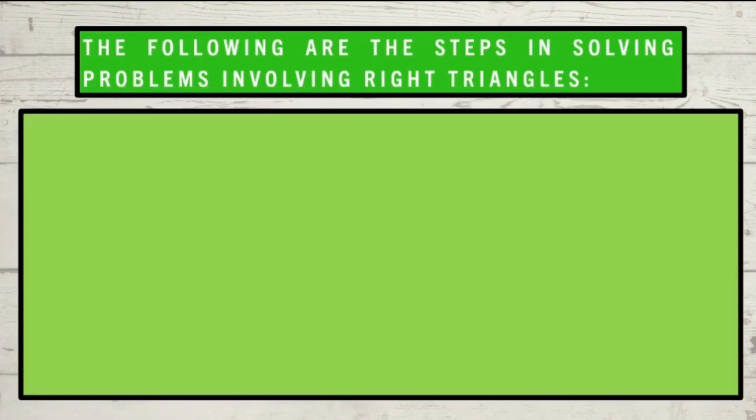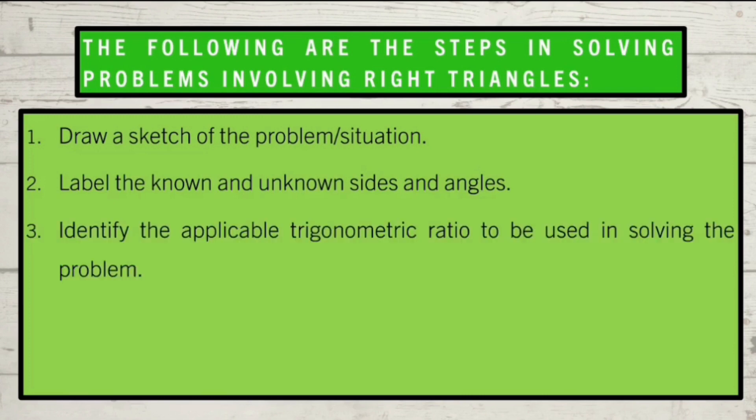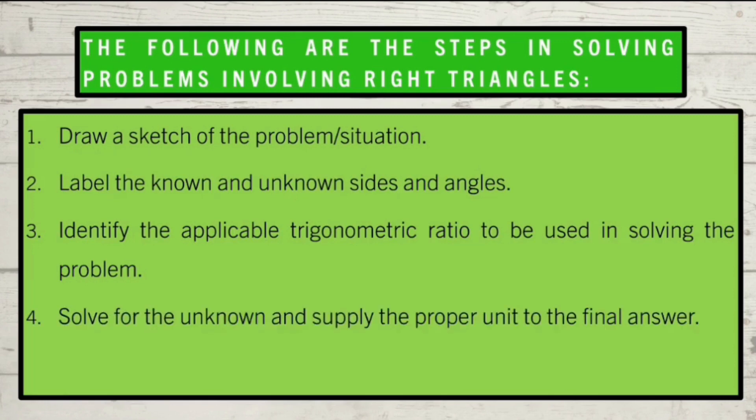Now, let's enumerate the systematic steps in solving real-life problems, which is an effective method of solving problems. First, draw a sketch of the problem or the situation. Second, label the known and unknown sides and angles. Third, identify the applicable trigonometric ratio to be used in solving the problem. Fourth, solve for the unknown and supply the proper unit to the final answer. And fifth, check if necessary.